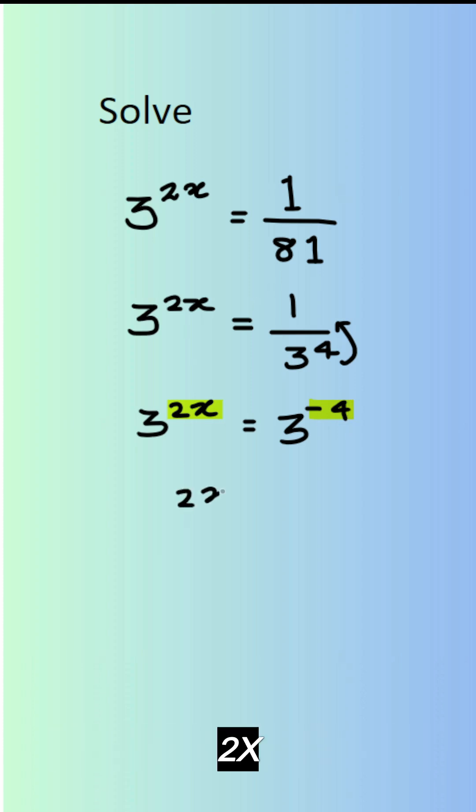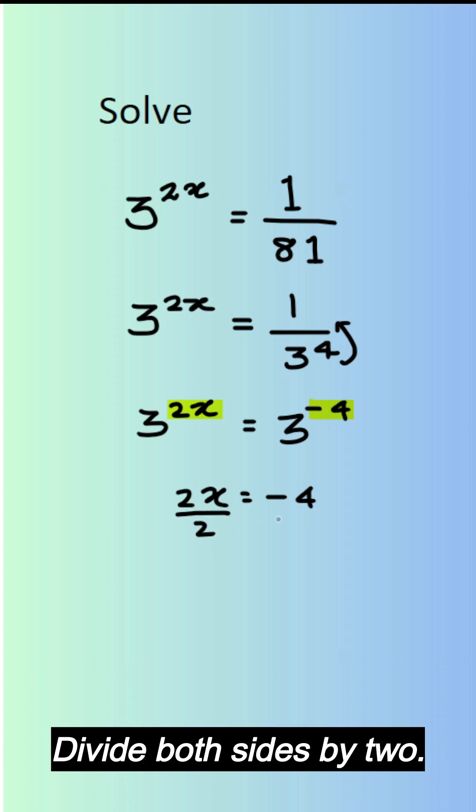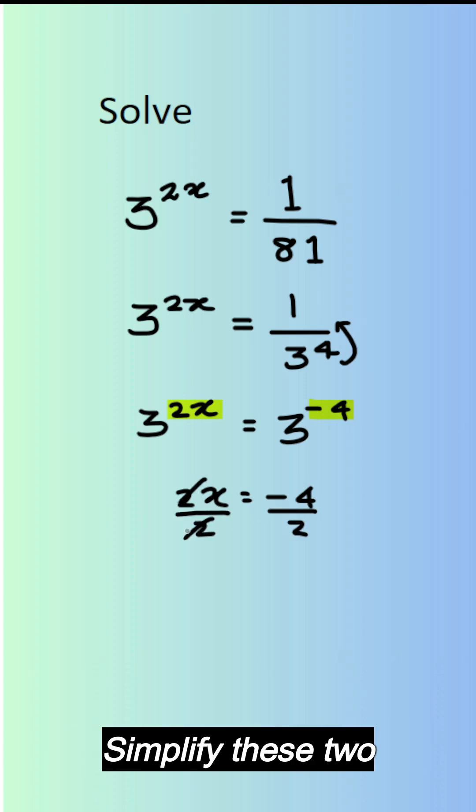So we write 2x is equal to negative 4. Divide both sides by 2, simplify these two. x is equal to negative 2.